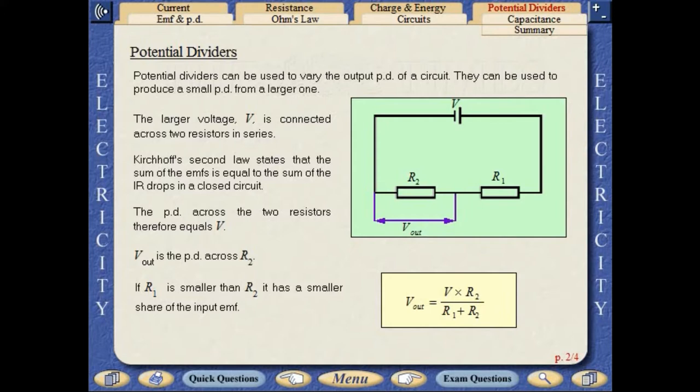Potential dividers can be used to vary the output PD of a circuit. They can be used to produce a small PD from a larger one. The larger voltage, V, is connected across two resistors in series. Kirchhoff's second law states that the sum of the EMFs is equal to the sum of the IR drops in a closed circuit. The potential difference across the two resistors therefore equals V. Vout is the PD across R2. If R1 is smaller than R2, it has a smaller share of the input EMF.